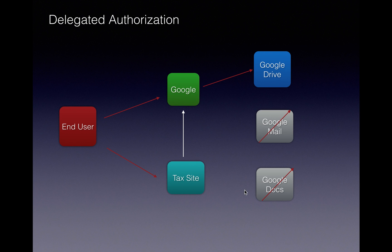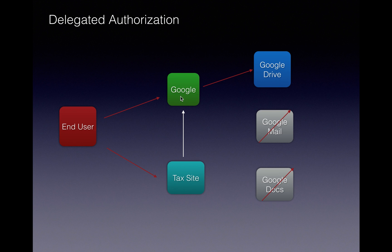OAuth is a standard that defines the rules so that any application can be a part of this entire flow to do federated authentication and delegated authorization. That is, a user grants access to an application to perform actions on the user's behalf, and the application can only perform those actions which the user authorizes it to do.